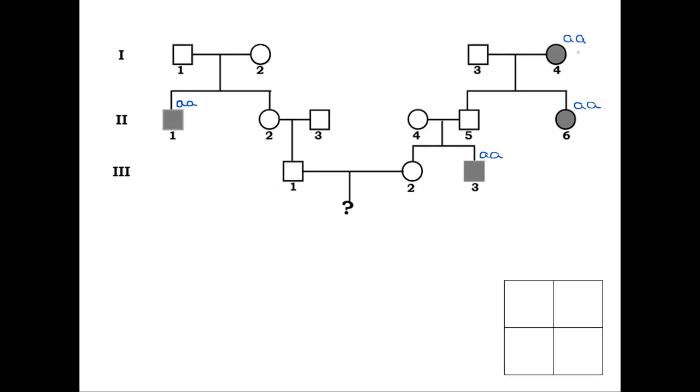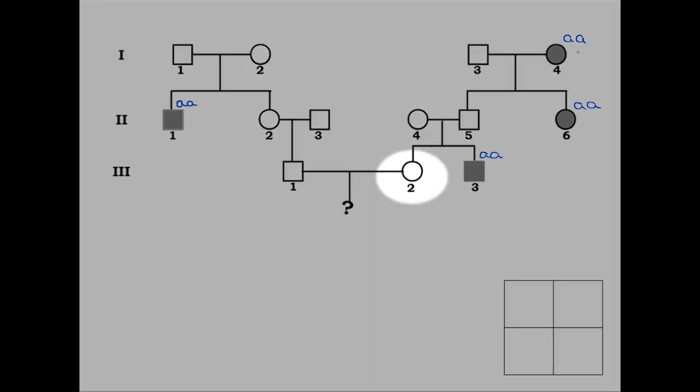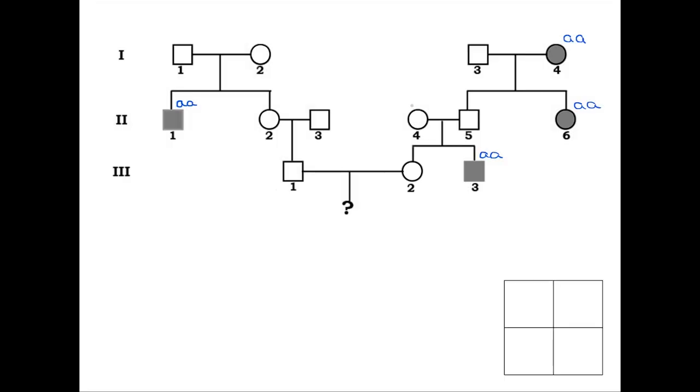Since neither the expectant mother nor the father shows this recessive trait, their child can only be affected if both of them are heterozygotes. So our next step is to figure out the probability that each of them is heterozygous. Let's begin with the mother, individual 3-2. Her parents must both be heterozygotes and have the genotype Aa because her brother is affected by the trait.